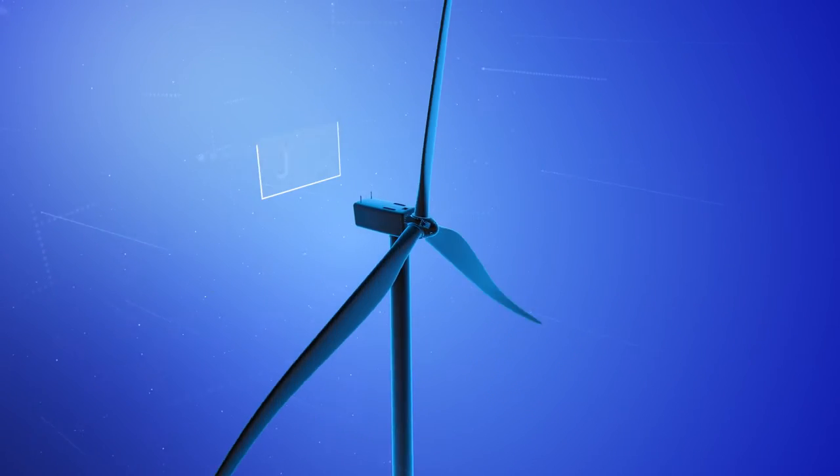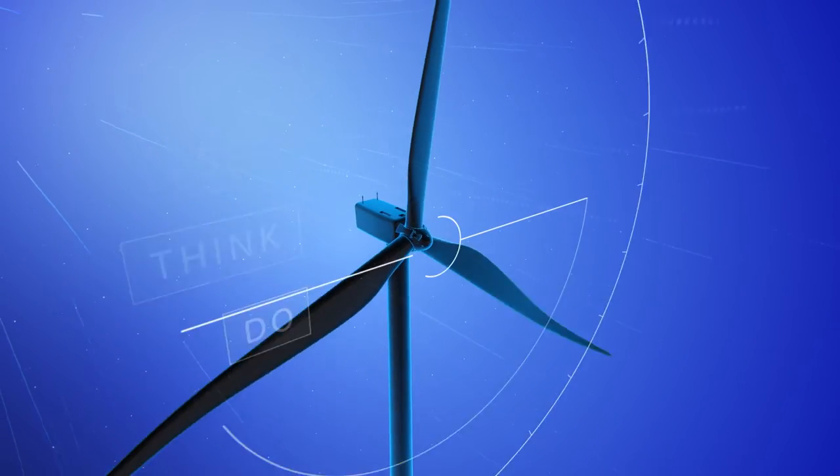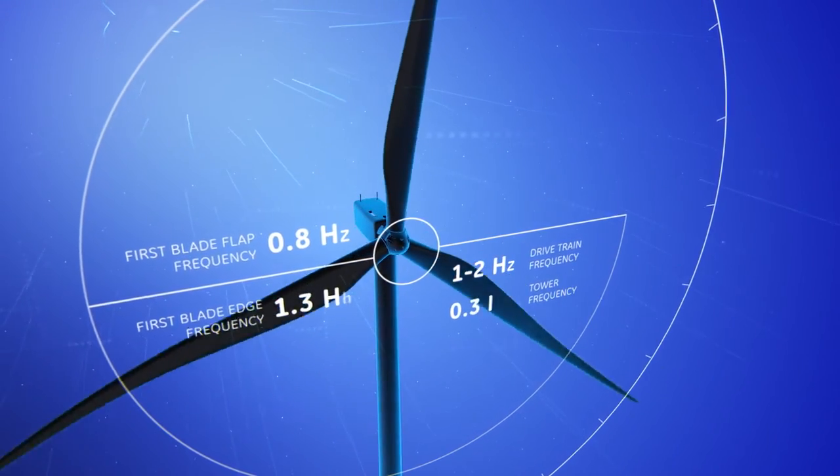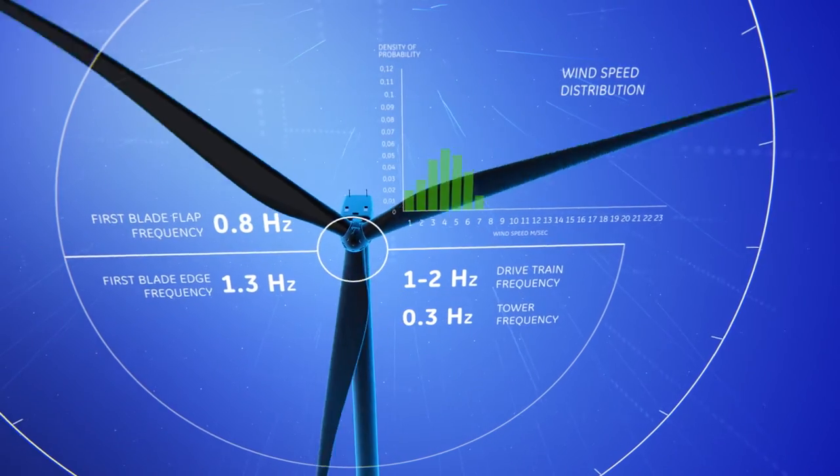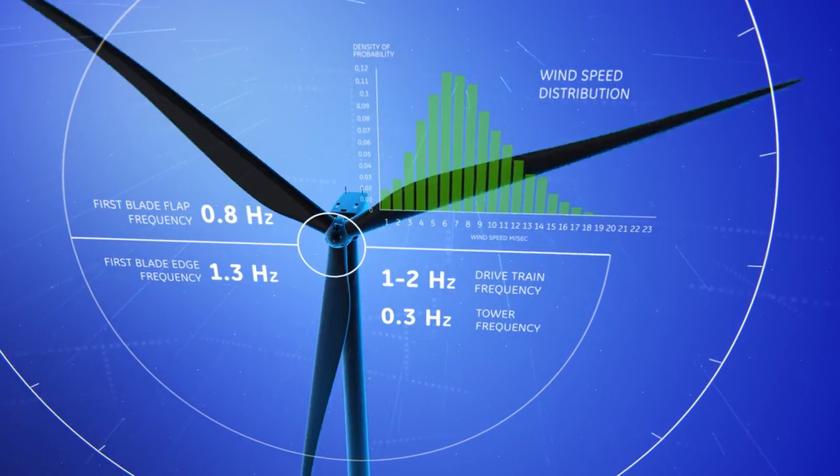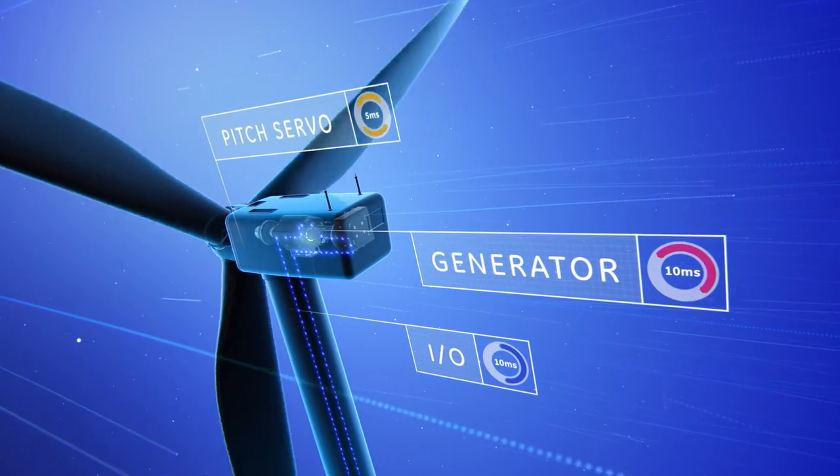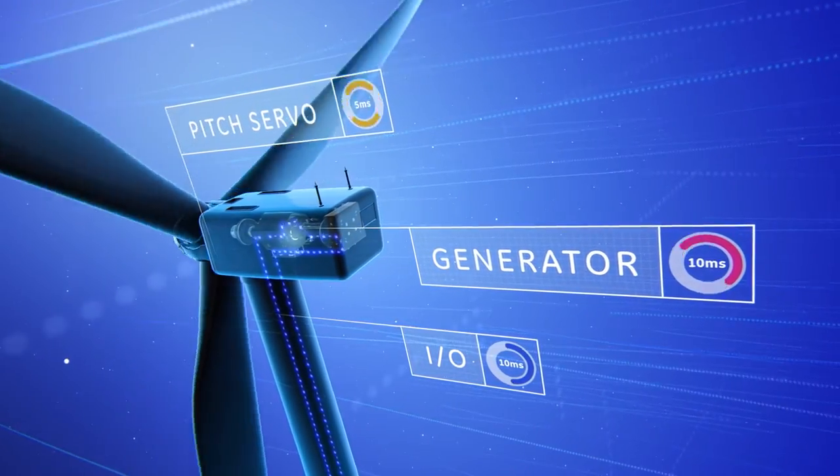The control system must see, think, and do quickly, in real time, at a pace that must be much faster than the physics of the system. Those physics are formidable and include the fast variations of the wind and the natural frequencies of the blade, tower, and other components. To guarantee a reliable and safe system, the controller must see, think, and do 100 times per second.